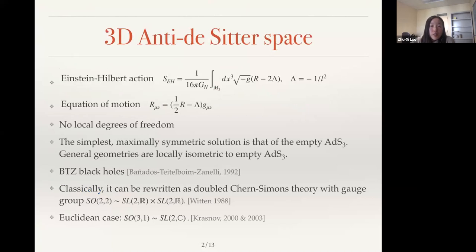So here is a brief introduction to the 3D AdS space. Here is the Einstein-Hilbert action. G is Newton's constant, small g is the metric, R is the scalar curvature. Lambda is the cosmological constant. It is negative 1 over L squared. L is the curvature radius of the geometry. The equation of motion gives Einstein's equation and there is no local propagating degrees of freedom in this system. So there are no gravitational waves. We only have some global type of excitations. The simplest solution to the equation of motion is the empty AdS3. It's like the ground state of the AdS3 geometry. General geometries are locally isometric to these empty AdS3s.